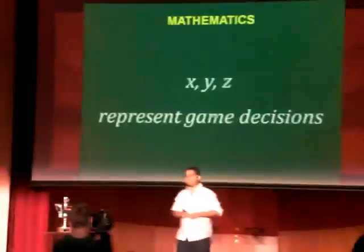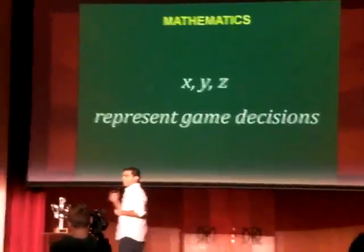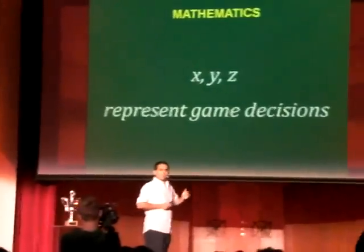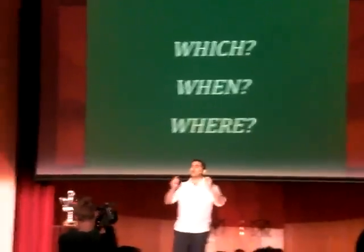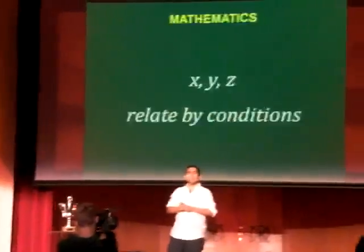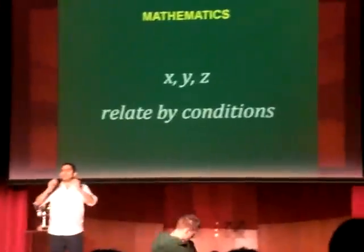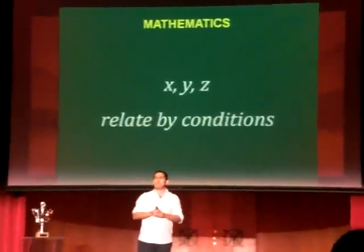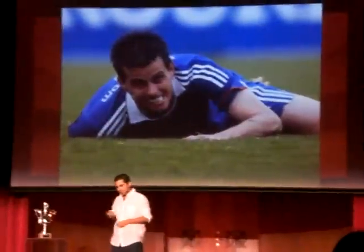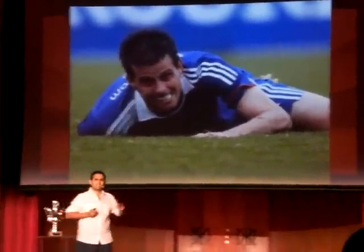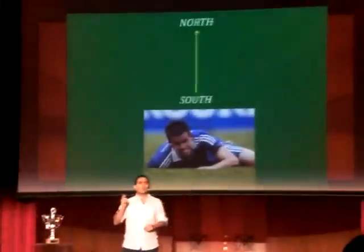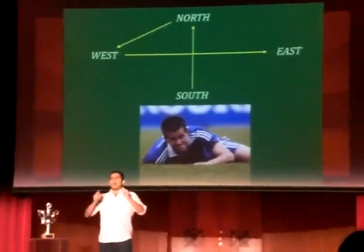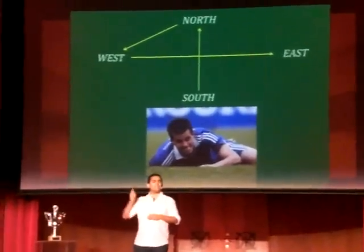How do I use mathematics? I represent each game of the league by variables X, Y, and Z. These variables represent decisions on which teams play against each other, when, and where. I also create mathematical relations to consider all these economic and sport fairness conditions. For example, it would be very exhausting for the players of a team in the south to travel north, west, and east in three consecutive games. If you want to avoid this, we can express it by a mathematical relation, as simple as this one.